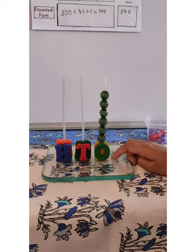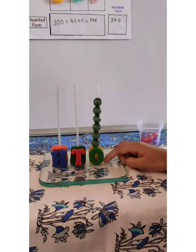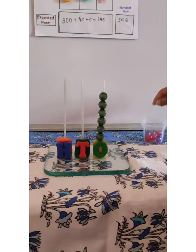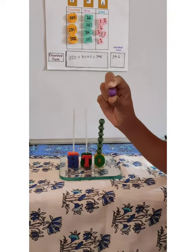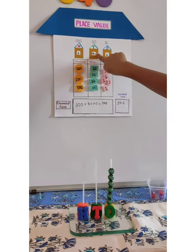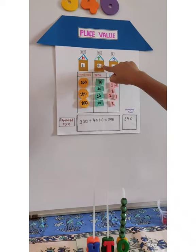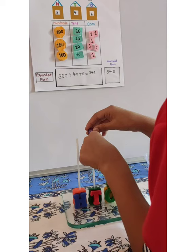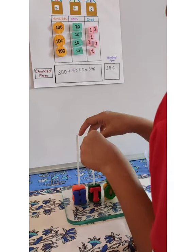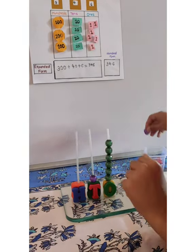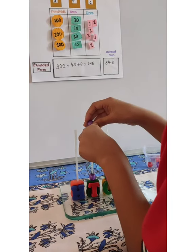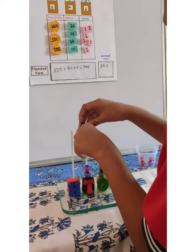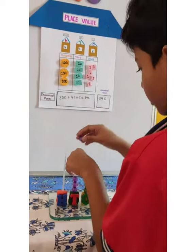Now the 6th bead — we got 6 beads on the ones place. Now moving toward the tens place. The purple bead stands for 10, so we have 4 at the tens place: 4 purple beads — 10, 20, 30, and last one 40.